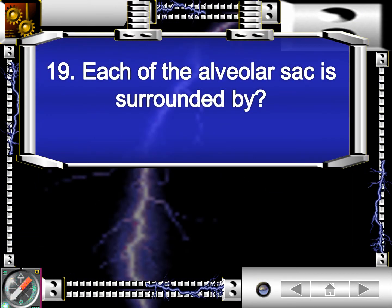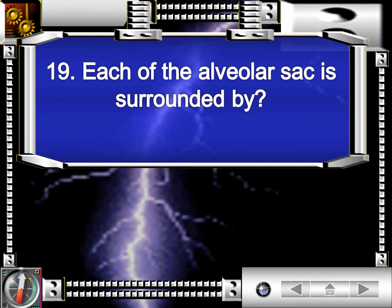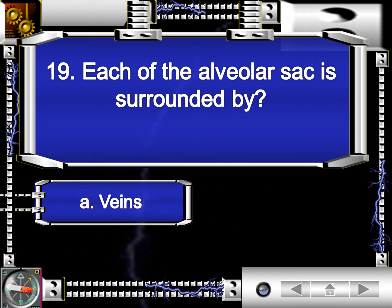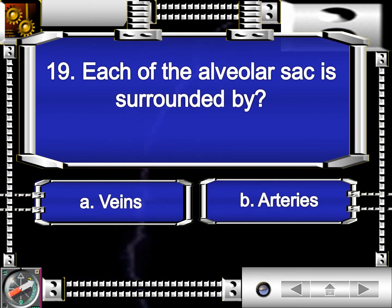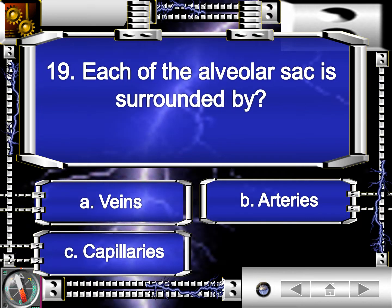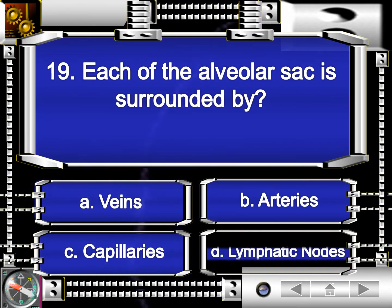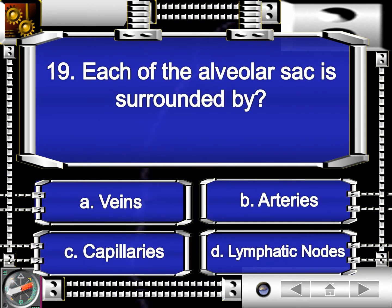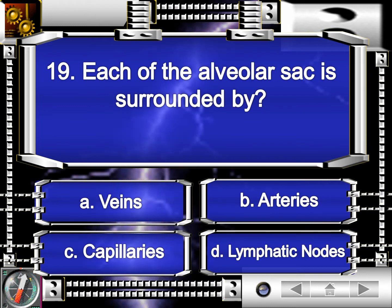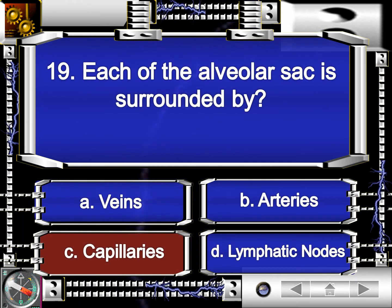For question number 19. Each of the alveolar sacs is surrounded by letter A, veins. Letter B, arteries. Letter C, capillaries. And letter D, lymphatic nodes. The correct answer is letter C, capillaries.